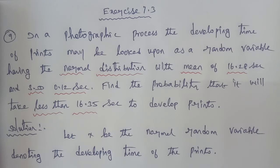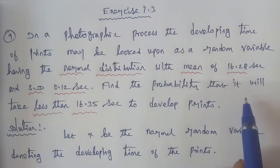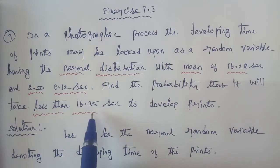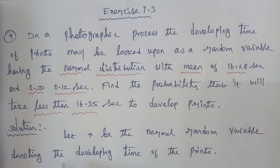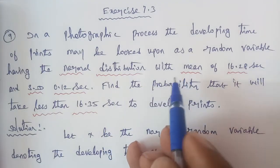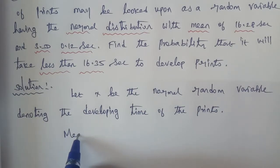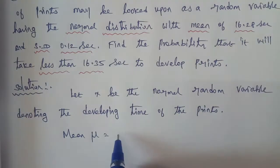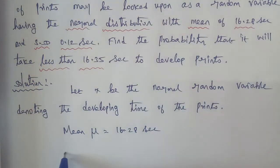So the given question is about photographic development timing under normal distribution. Mean is 16.28 seconds and standard deviation is 0.12 seconds. Let X be the normal random variable denoting the developing time of the prints. Given: mean μ = 16.28 seconds and standard deviation σ = 0.12 seconds.